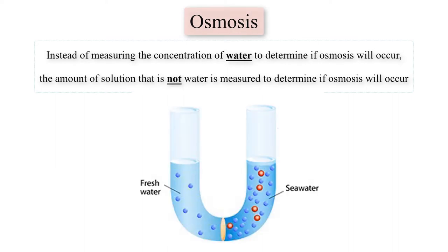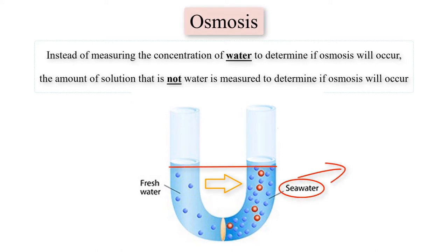A beaker of pure water is connected through a pipe to a beaker of salt solution dissolved in water. Will osmosis occur? The answer is yes — water will flow from the beaker with pure water into the beaker with the salt solution. How do we know? By checking which beaker has a lower concentration of water. If both beakers contain 1 liter, the beaker with the salt solution has less water in it. Water will flow from the pure water beaker into the salt water beaker.